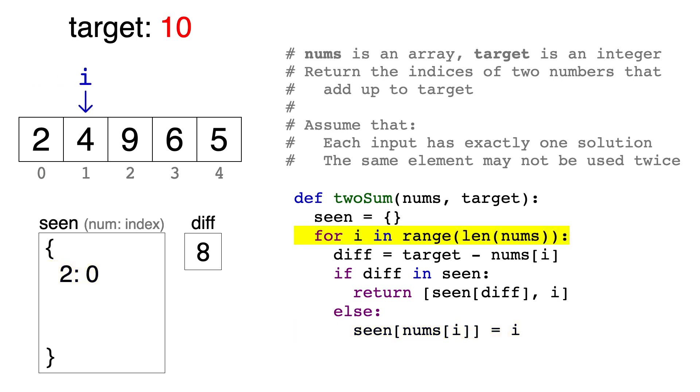The next number is 4, and the difference with 10 will be 6. Now we ask, have we seen 6 before in this array? The answer is no, so again, we'll record what we just saw. The key will be 4, and the value is index 1.